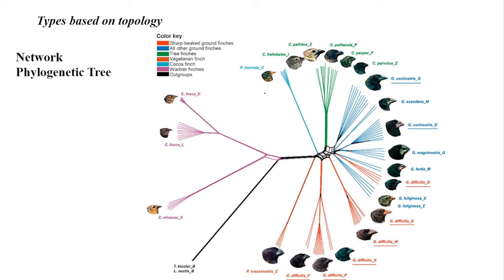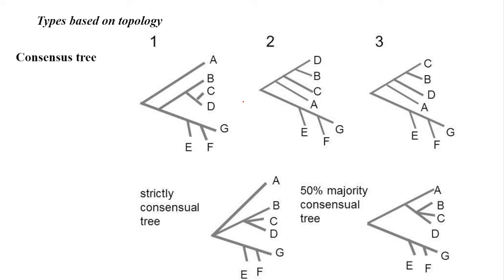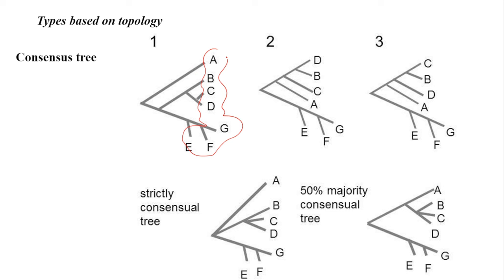These are common available species on an island — some are sharp-beaked, some are blunt, some are different finches. These finches are well-known from Darwin's theory of the Galapagos Islands, where different species are available and we can represent those relations by constructing a network. A consensus tree allows representation of different varieties of relations among different species, strictly categorized into strictly consensus trees and 50 percent majority consensus trees, applicable for research purposes.